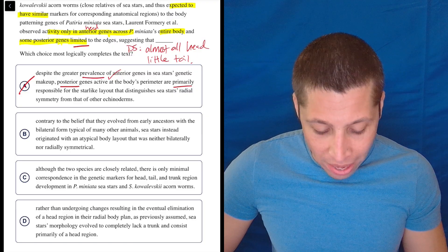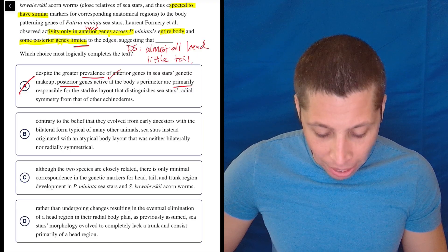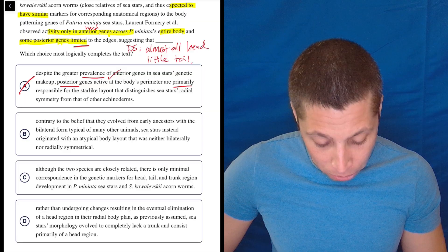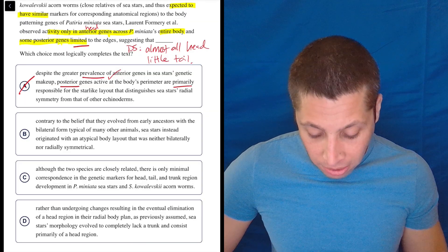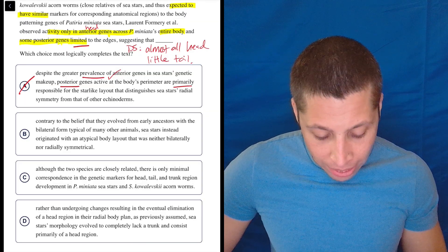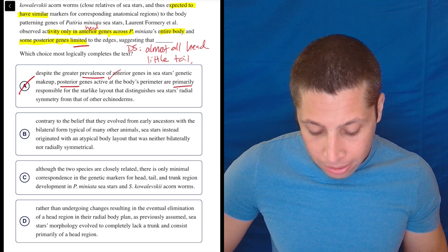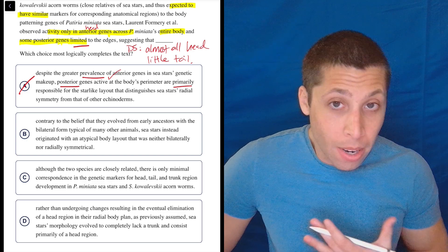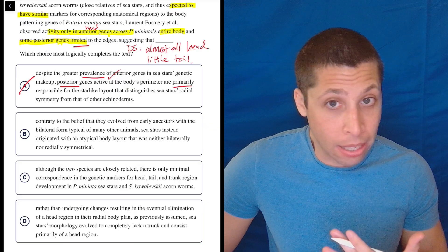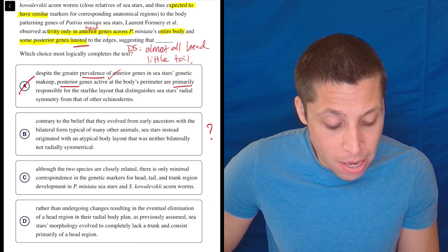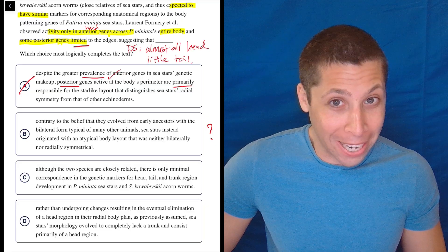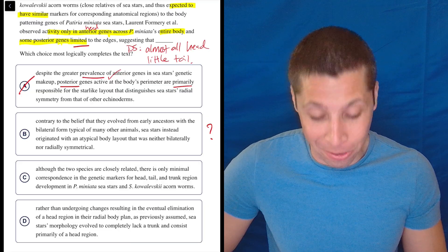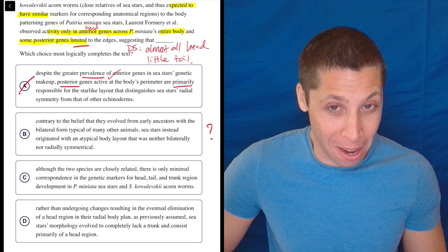B. Contrary to the belief that they evolved from early ancestors with the bilateral form typical of many other animals. Okay, so let's hold off on interpreting that. Sea stars instead originated with an atypical body layout that was neither bilaterally nor radially symmetrical. Doesn't seem to be talking about heads and tails here. So maybe this makes sense? But I'd love it if they used words like anterior and posterior, because that's what our dumb summary is kind of about. So let's move on.